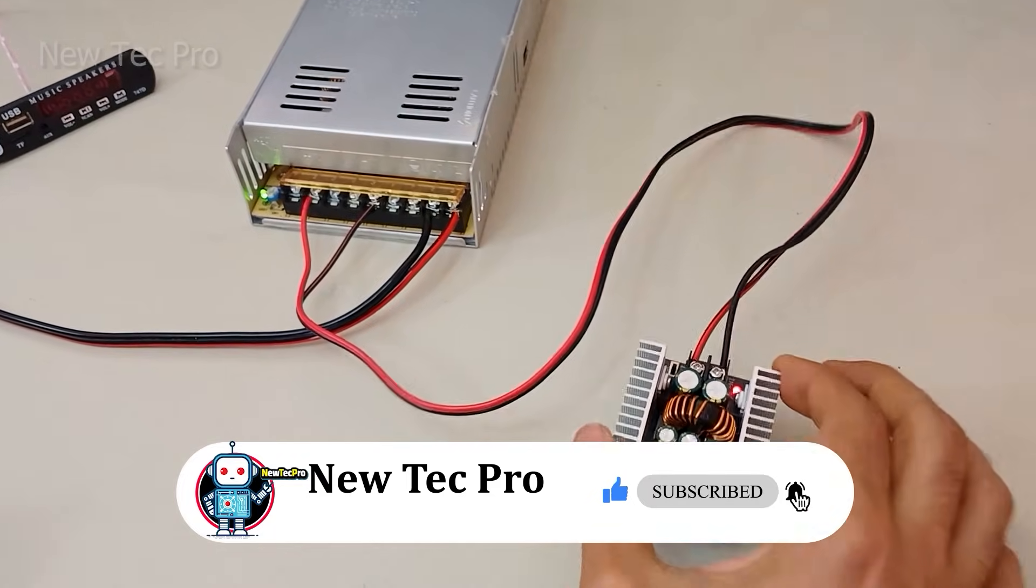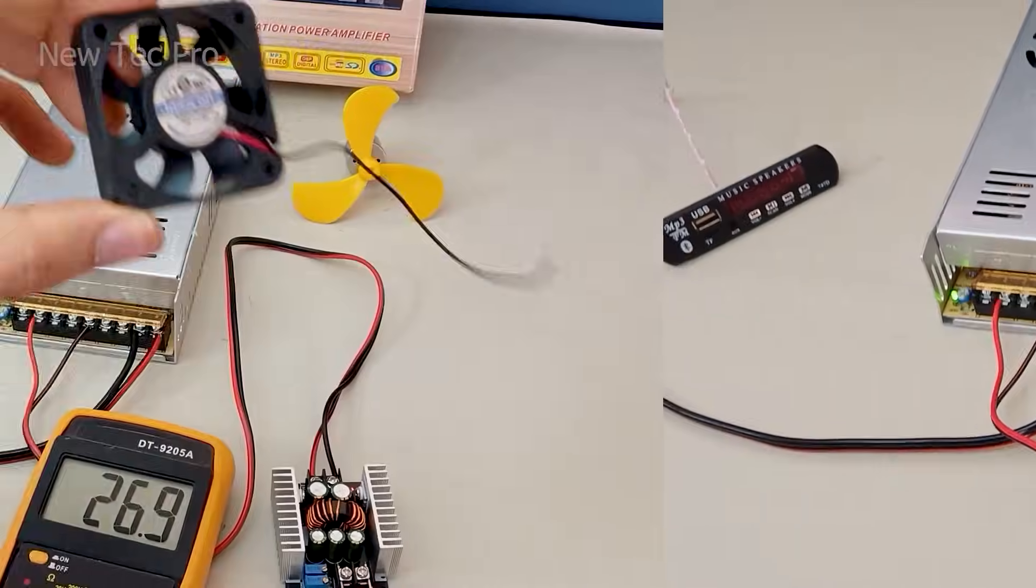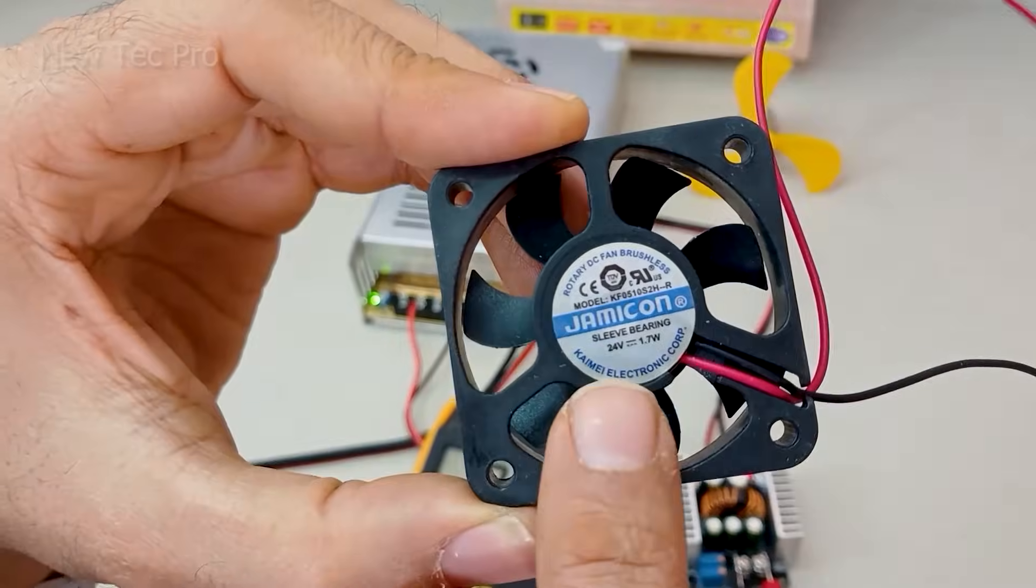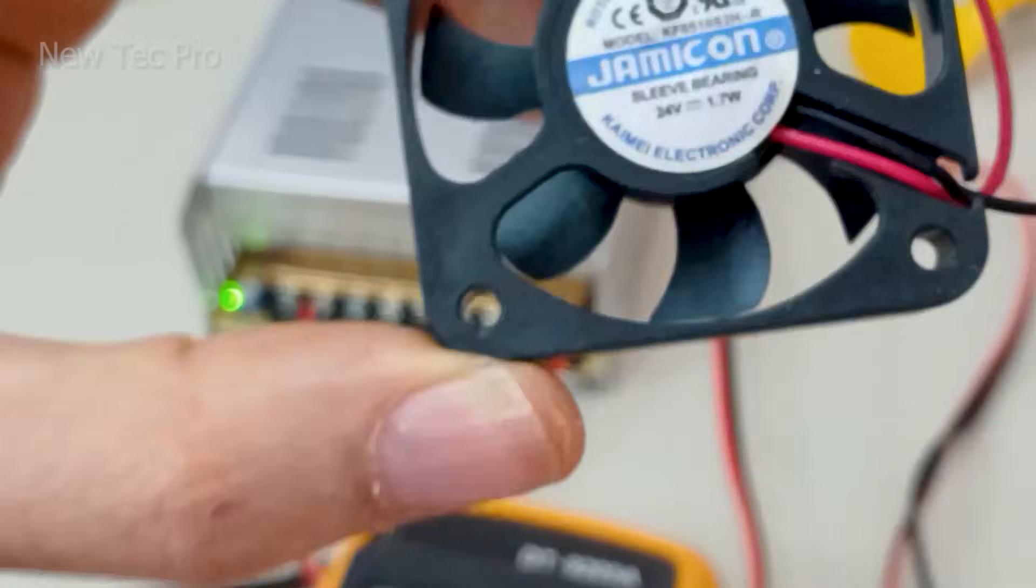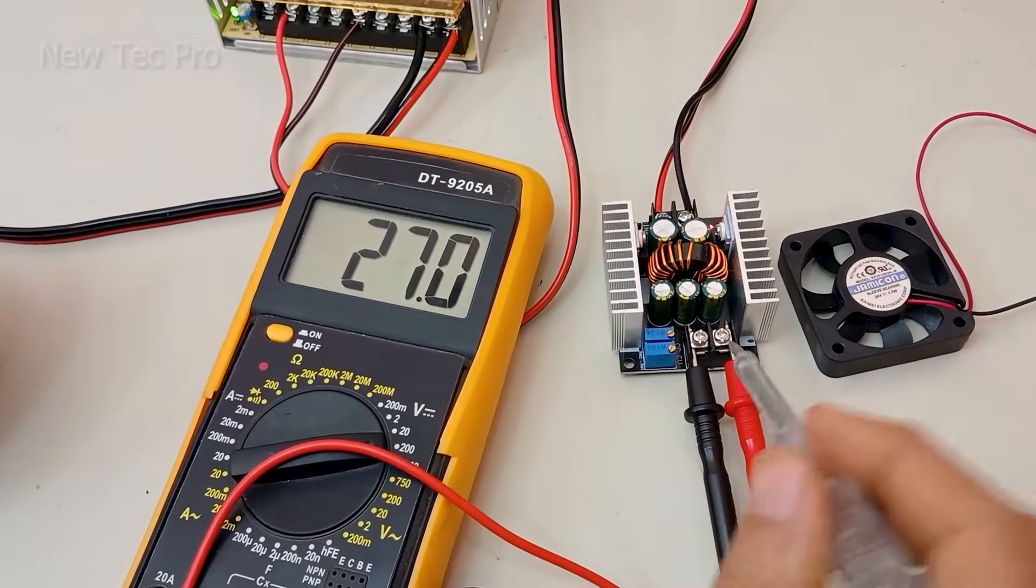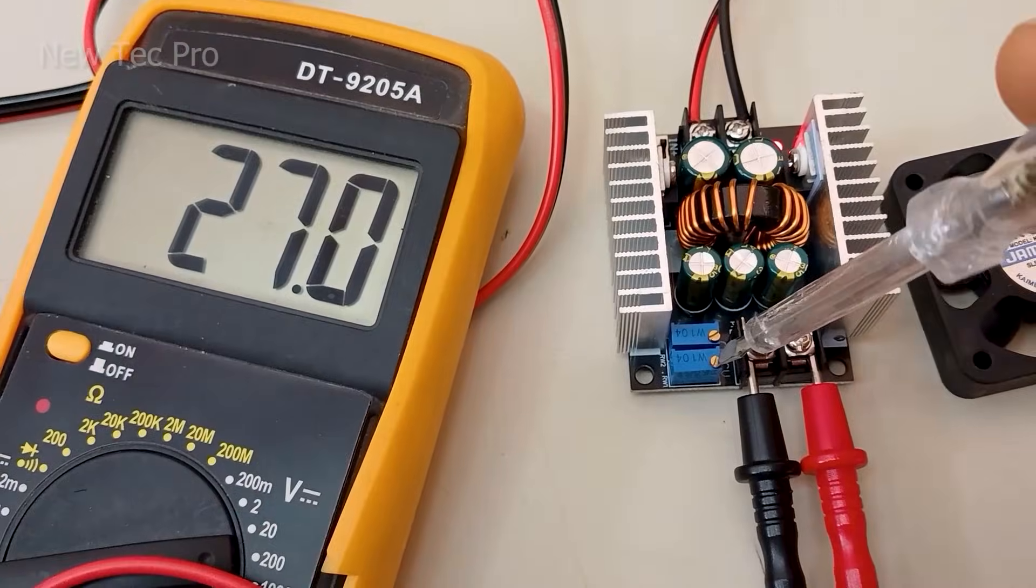For example number one, this fan is 24 volt. I'll try to reduce 27 to 24 by this potentiometer.